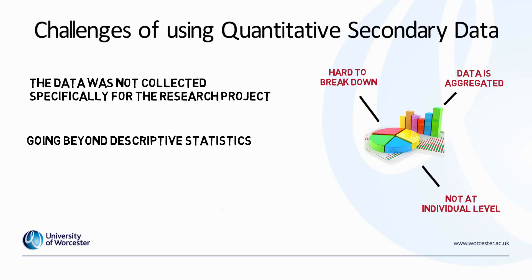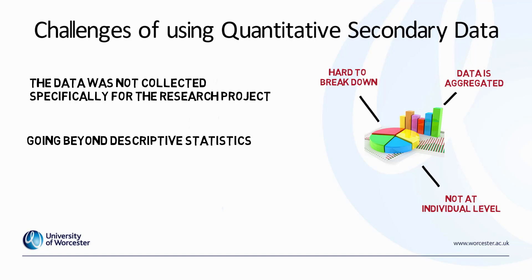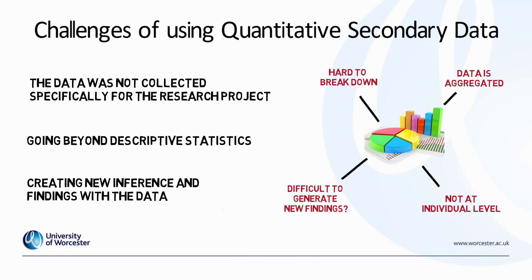Also, the data collected is normally being used for the purpose of the original research. This can make it hard for the secondary researcher to create new inference and findings, because the data has already been used as part of an existing research project and published. One important thing when developing a masters level piece of research is to make sure it is innovative, novel, and original — and this can be challenging if you're using secondary data which has already been used for another piece of research.